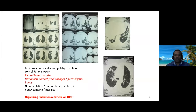Her HRCT showed a peribronchiovascular pattern of distribution, patchy areas of peripheral consolidation, and ground-glass changes. Individual cuts showed some pleural-based arcades and globular parenchymal changes. There was no reticulation, traction bronchiectasis, honeycombing, mosaicism, or nodules — features you would associate with more progressive fibrotic lung disease. So a high-resolution diagnosis of organizing pneumonia was made.